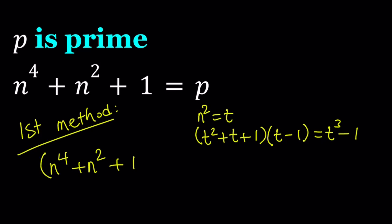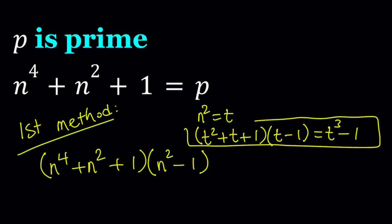Let's go ahead and multiply n to the fourth plus n squared plus 1 by n squared minus 1. We're basically using this identity but replacing T with n squared, so this becomes n squared minus 1. Their product is going to be, from difference of two cubes, n to the second power to the third power, which is n to the sixth minus 1. You could also find the same result by distributing: n to the sixth, then minus n to the fourth plus n to the fourth cancel out, then minus n squared plus n squared cancel out, and at the end you get minus 1.